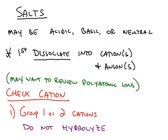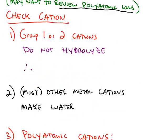It might be helpful to review the polyatomic ions so that you can recognize salts easier. Once you have the salt dissociated, you have to check the cation and the anion separately. So first, we'll go through the rules for checking the cation.